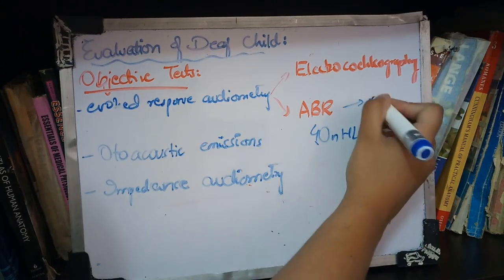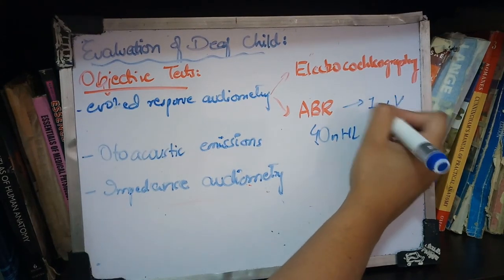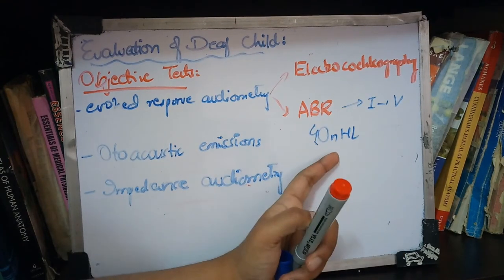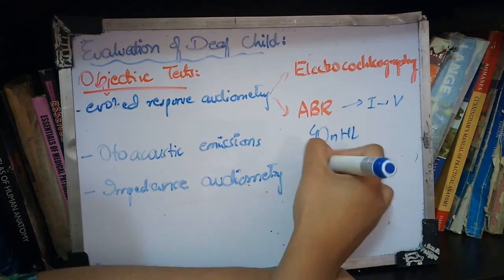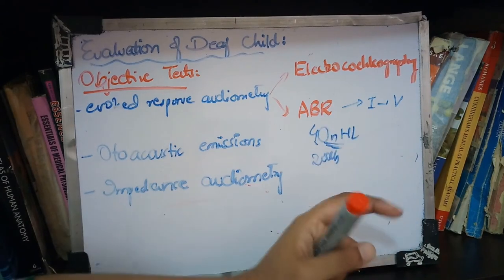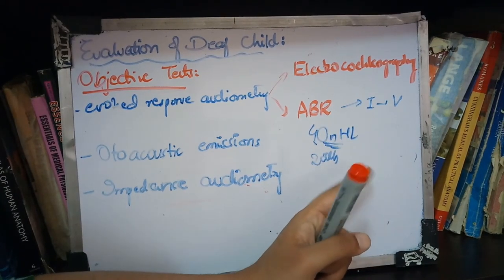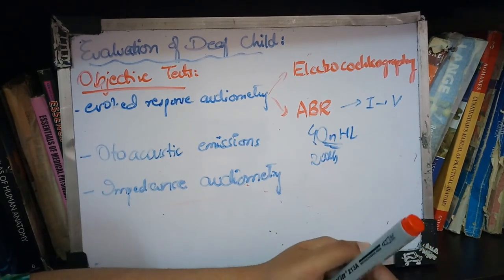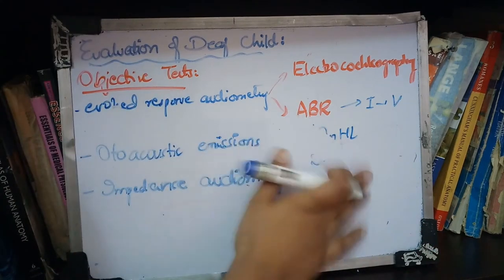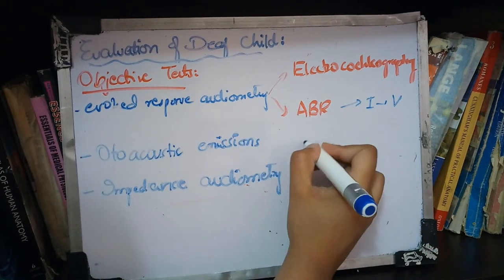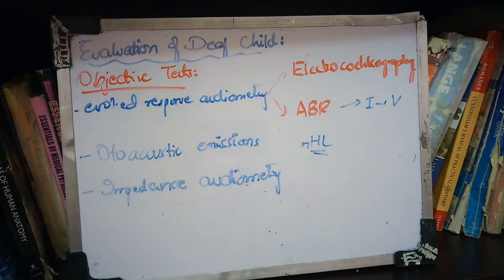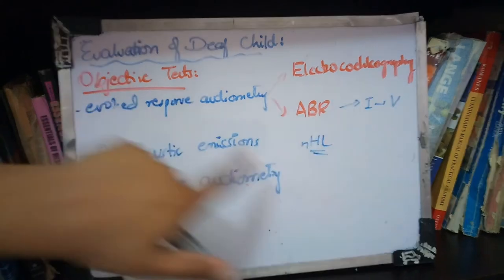In ABR, there are 1 to 5 waves that you detect. This is very detailed. In a screening test, we suppose a threshold of 20 decibels; if it is 40 decibels, the child may also be heard. But when testing as an objective test, we go into detail and study the waves to see the normal hearing level. So there is a difference between ABR and the ABR screening test.